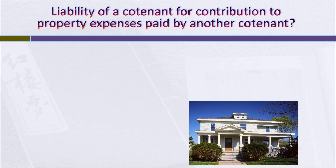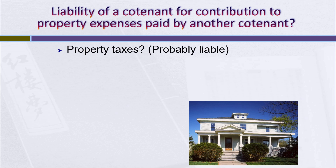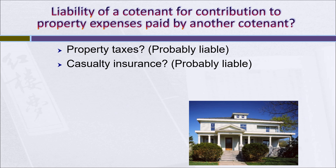Let's take a closer look at other categories of expenditures made by one co-tenant on the property and whether there's liability of the other co-tenants to kick in their shares by way of contribution. What about property taxes? In all probability, the ones who are out of possession are going to be liable for their shares of the property taxes. If the taxes aren't paid, the property could be sold by the county for delinquent taxes, making every co-tenant lose their interest. Paying property taxes is essential to preserving the property. Likewise, casualty insurance — there will probably be liability on the part of those who didn't originally pay it, since insurance is a way of preserving and protecting the property.